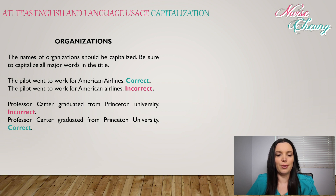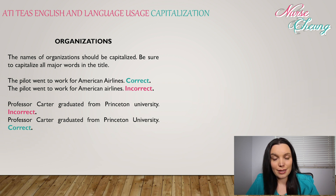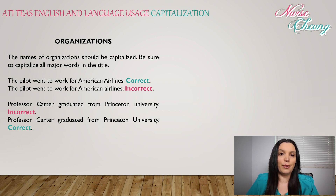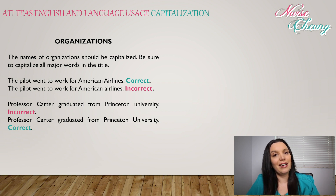Here's another example: 'Professor Carter graduated from Princeton university' — this is incorrect. Princeton University is the name of the organization, so both 'Princeton' and 'University' should be capitalized. The correct version is 'Professor Carter graduated from Princeton University' — they are both capitalized, so this is correct.